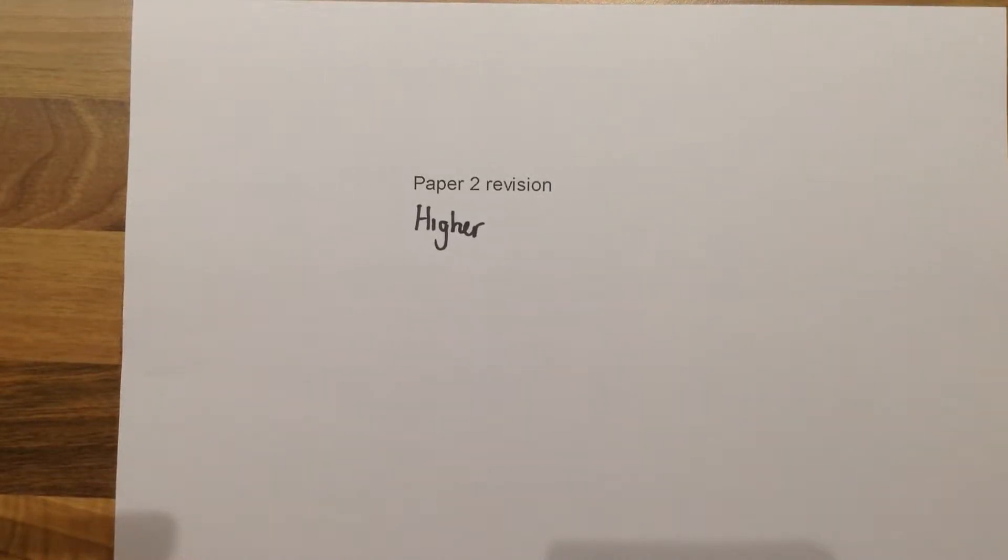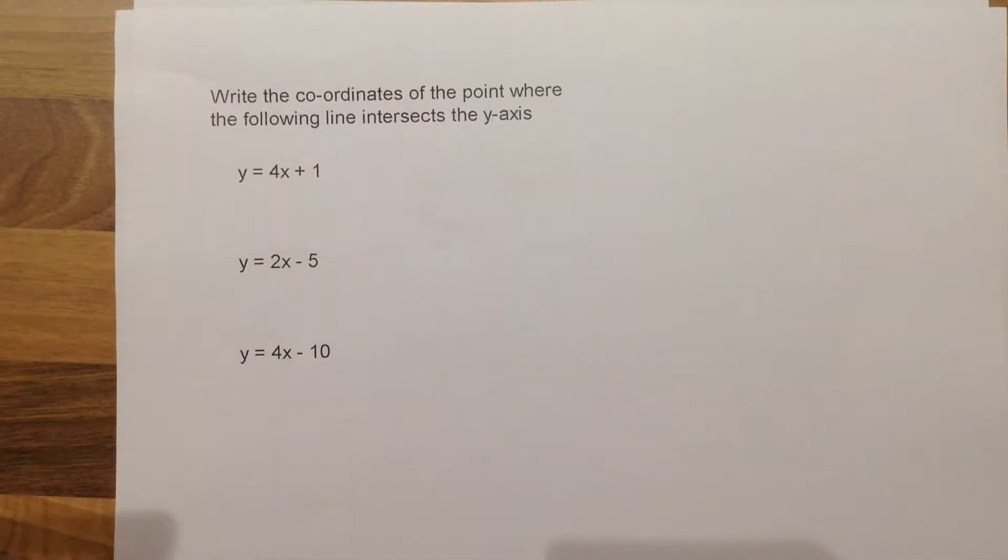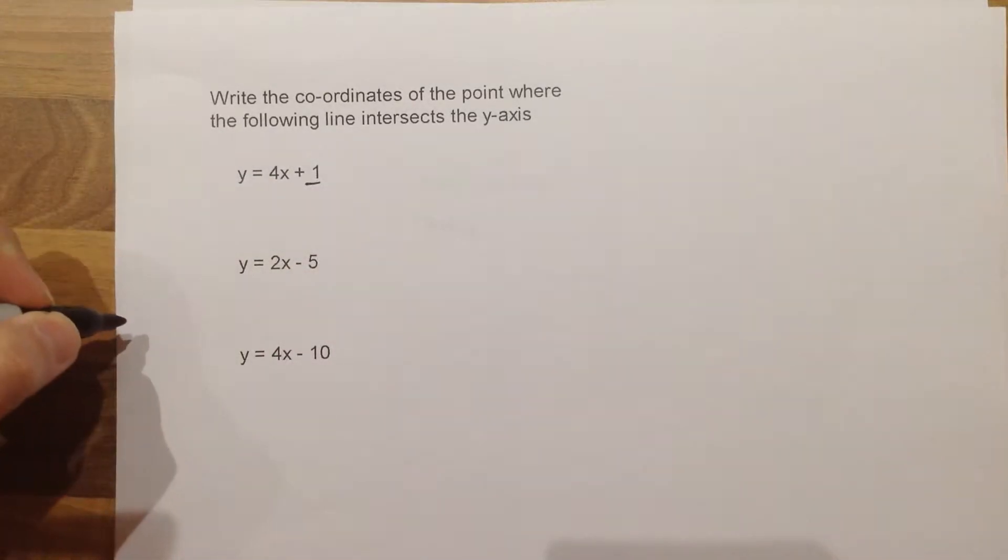This is section 1 of paper 2 for the Hyatt exam. For a question like this, all you need to know is that the y-intercept is the number at the end of the equation. So if you are wanting the coordinates of where it crosses the y-axis,